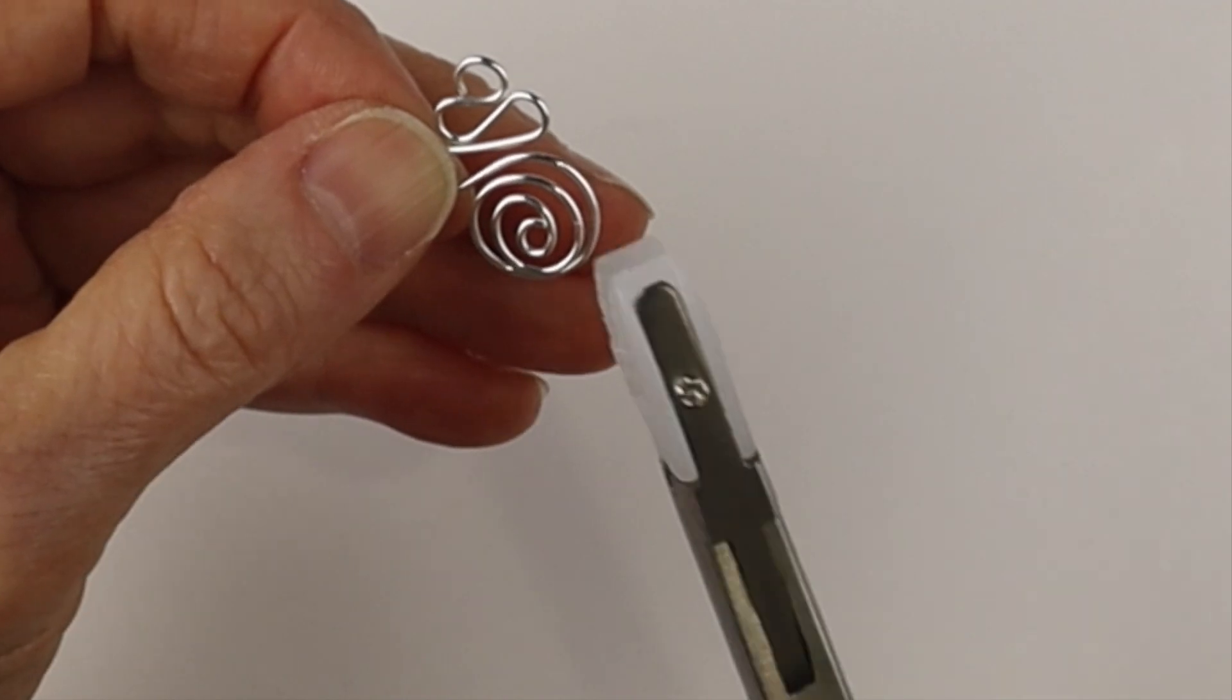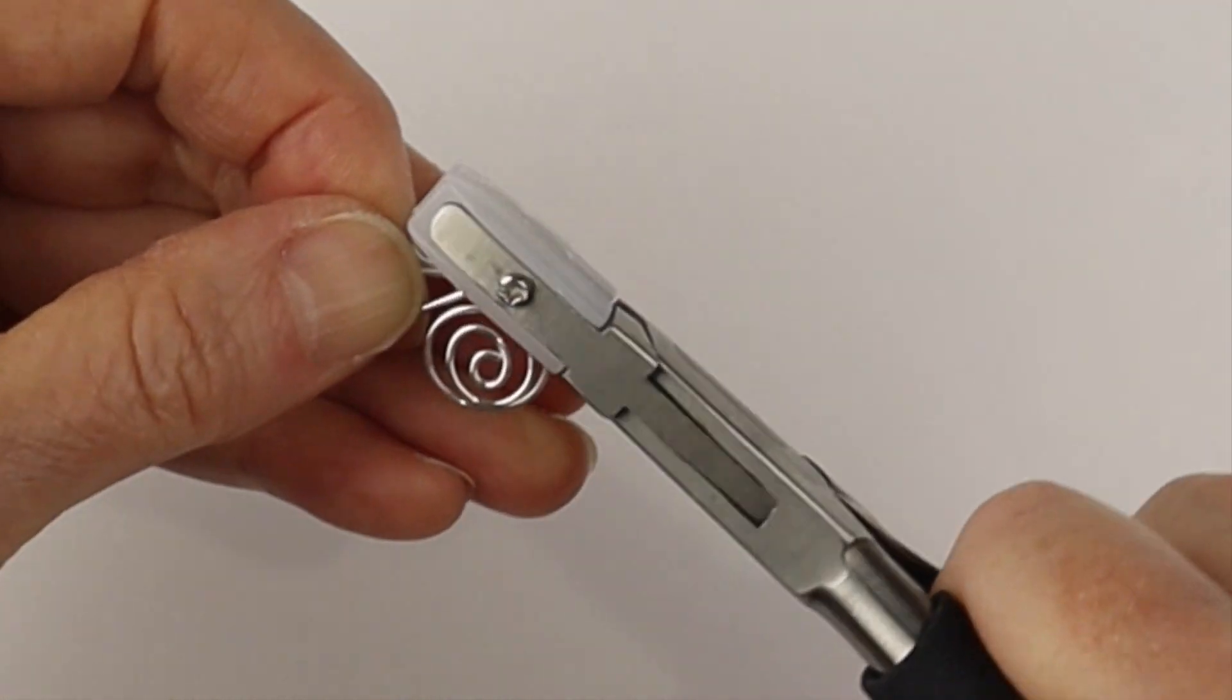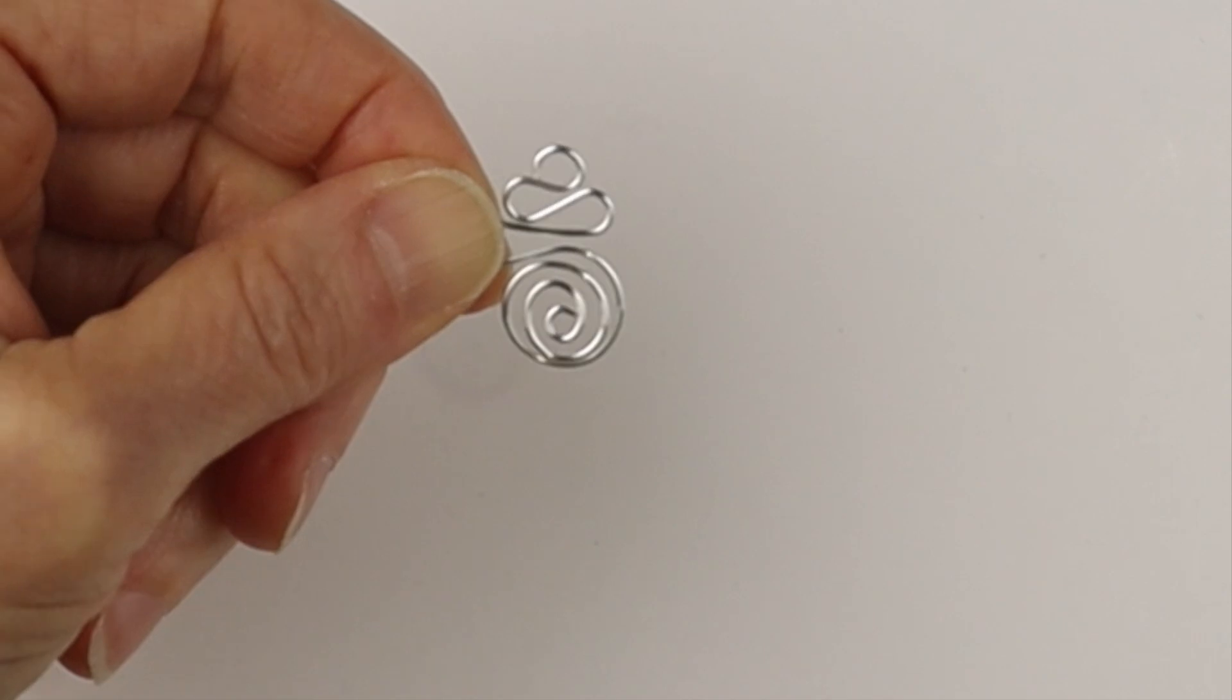So we're going to complete the spiral and then get our nylon jaw pliers just to press it down so it's flat.